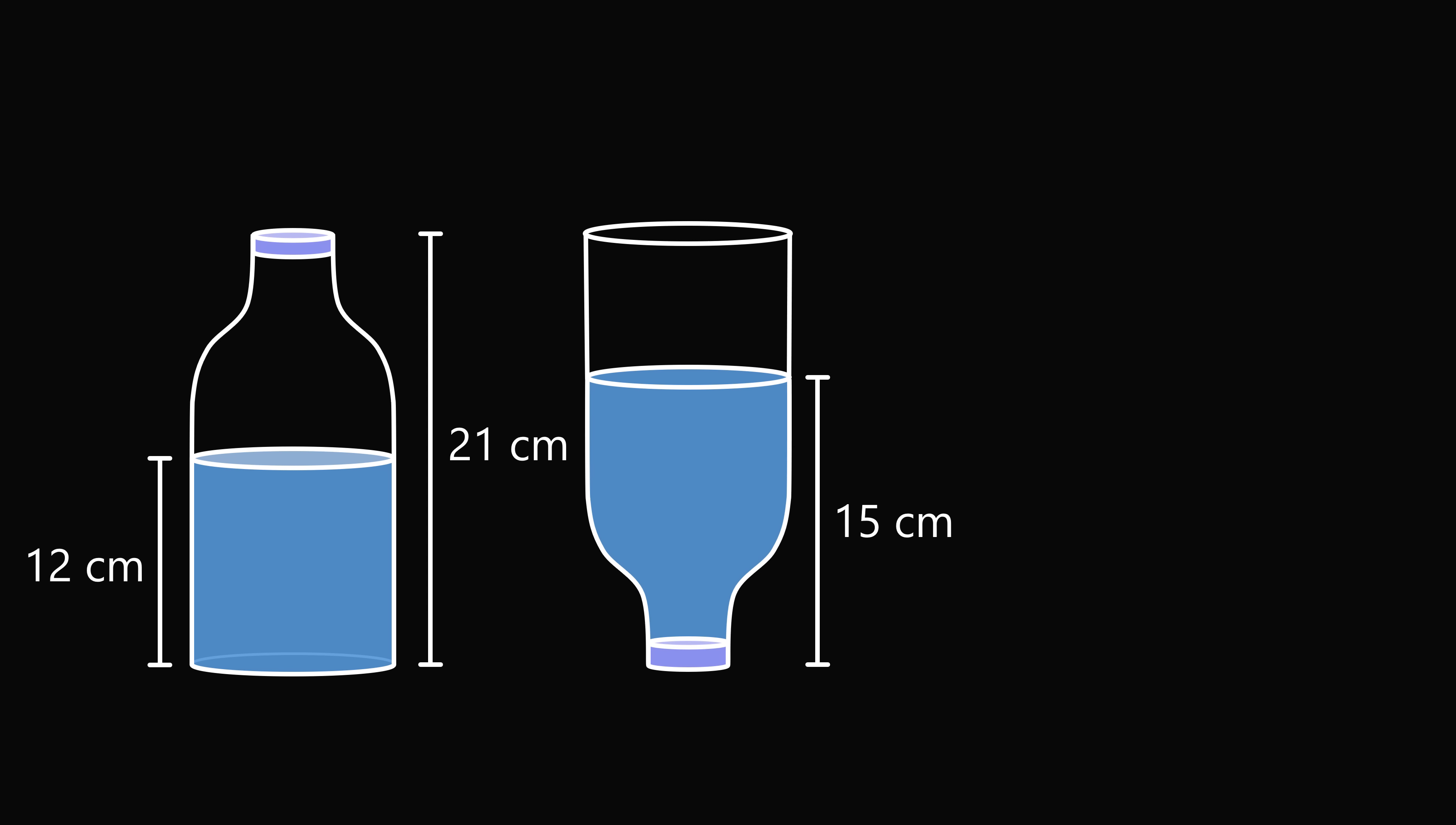At first, it seems impossible to solve the problem because we don't know the radius of the cylindrical base, and there's no way that we can measure the volume of the irregularly shaped top part of the bottle.